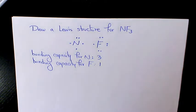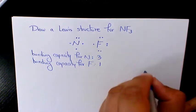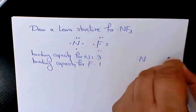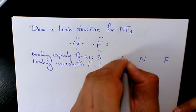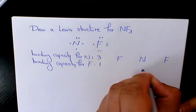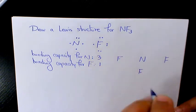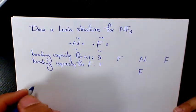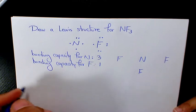So what we need to do is write the symbol for the central atom and then arrange the symbols of the other atoms around it. I have N in the center like that, and put all three F's around it.